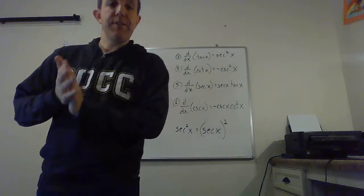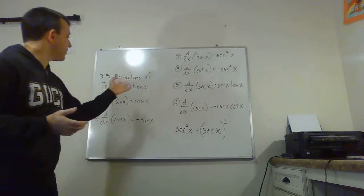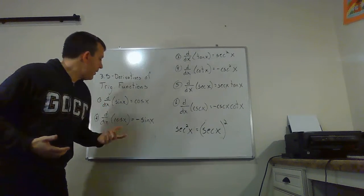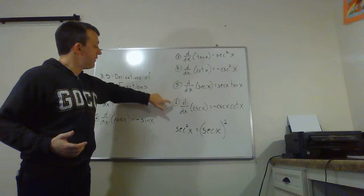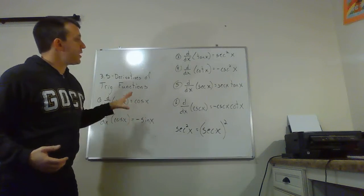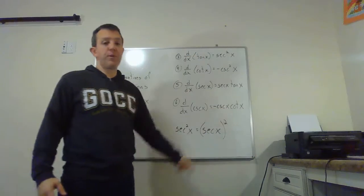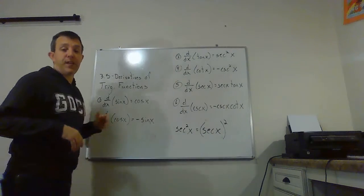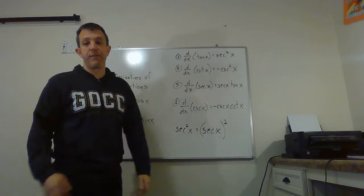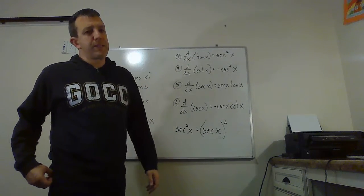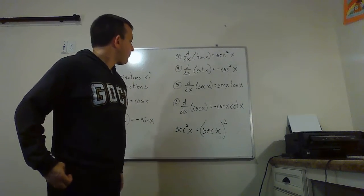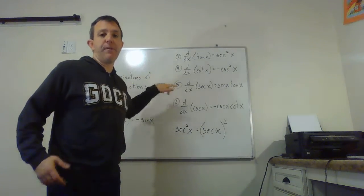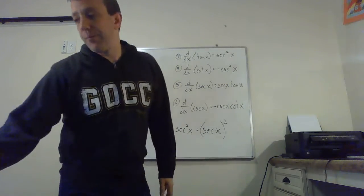The first thing I want to show is that for derivatives three through six, you can actually derive them just by using the first two derivatives and all the rules we have for derivatives from section 3. We're going to actually derive the derivative of secant, so hang on.